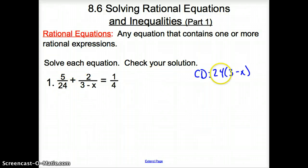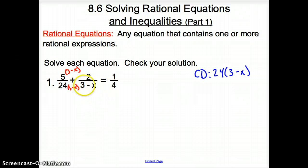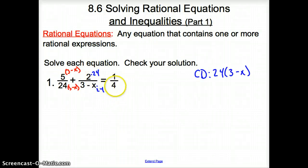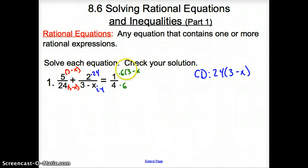Starting at 24, what does 24 need? It just needs a (3 minus x). So I'm going to take it times (3 minus x). How do I get this (3 minus x) to be our common denominator? I need to take that times 24. Then the 4 — what do I need to take that to get to 24? I need to take that times 6, top and bottom, and then also (3 minus x) there.